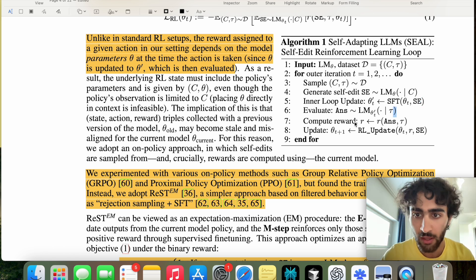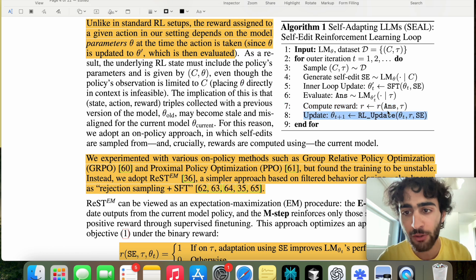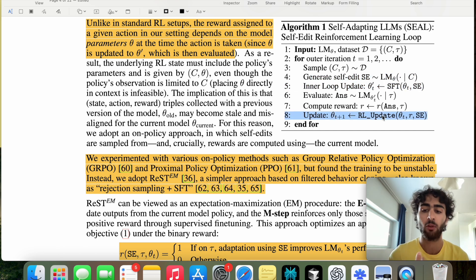And then we will evaluate, compute the reward, which is literally a binary reward. And then we will update our reinforcement learning policy, which is what gives us our self-edits, whether or not the self-edit was helpful to the model performing well on that context.